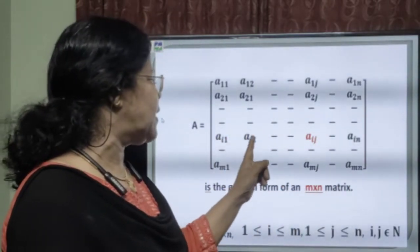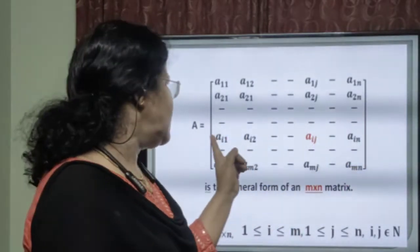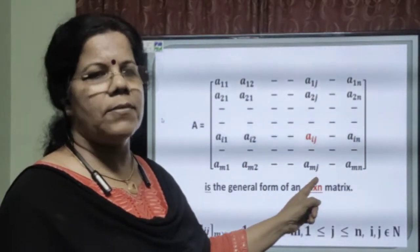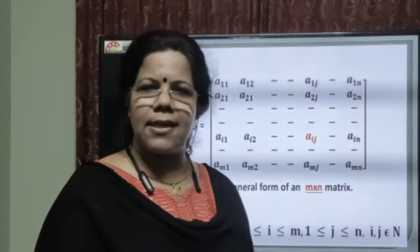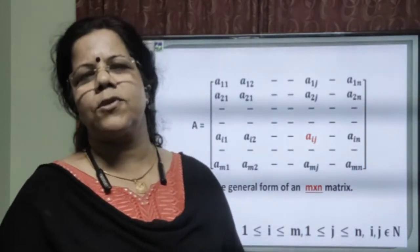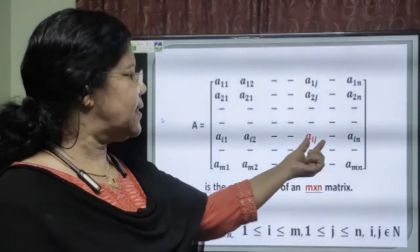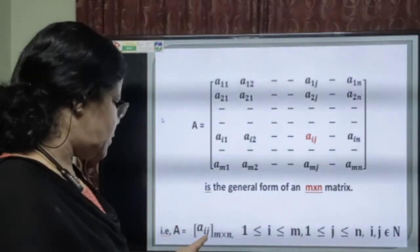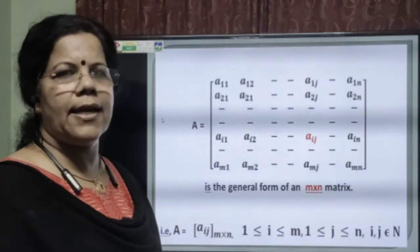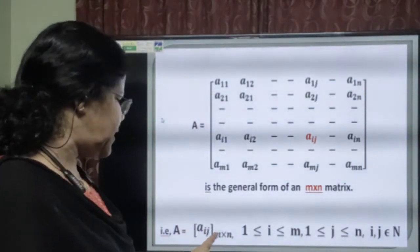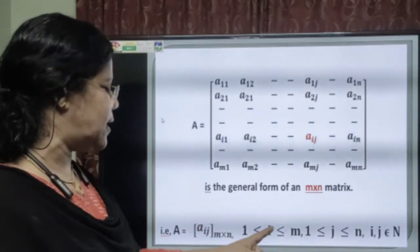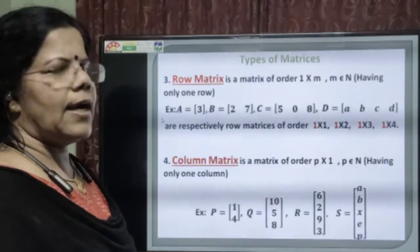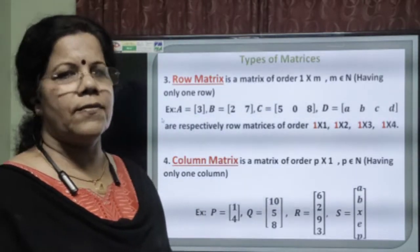Concentrate here: A_i1, A_i2, ..., A_iJ, ..., A_iN. This is the i-th row, and A_iJ is a general element belonging to the i-th row and j-th column. Using A_iJ, we can denote the matrix A as [A_iJ] of order M by N. This is a way of representing a matrix using the general element, where i varies from 1 to M, j varies from 1 to N, and i and j belong to the set of natural numbers.